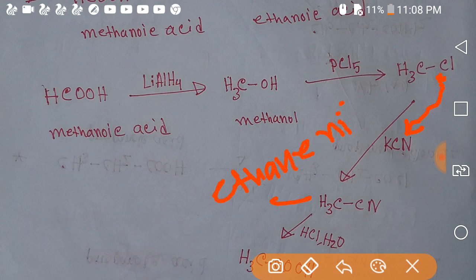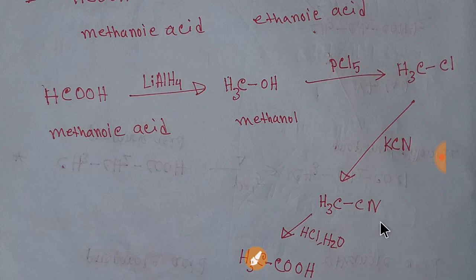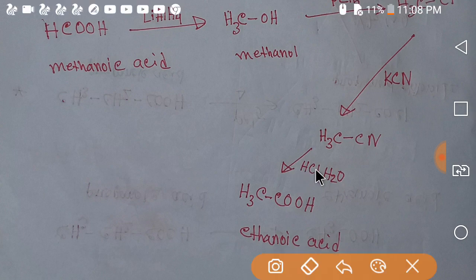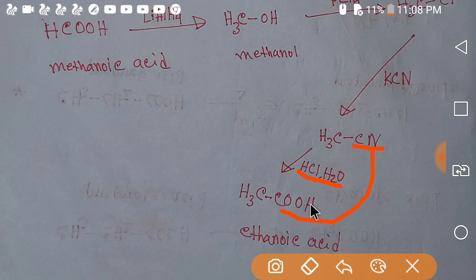This is ethanenitrile. After getting ethanenitrile, if you hydrolyze it with HCl in aqueous water, then the CN group will become a COOH group — that is ethanoic acid. You can now practice this.